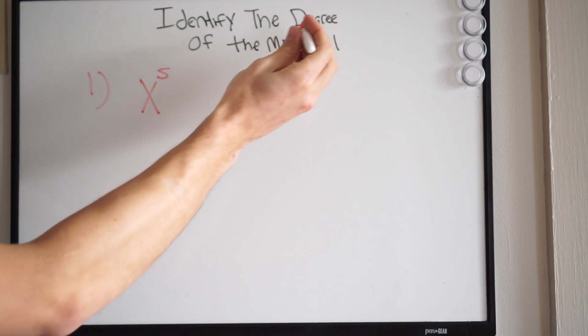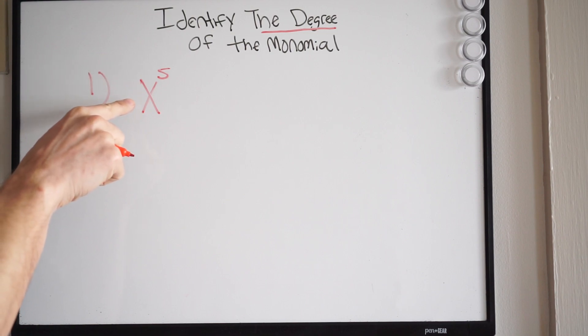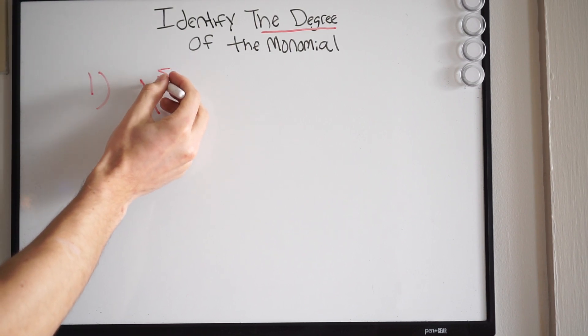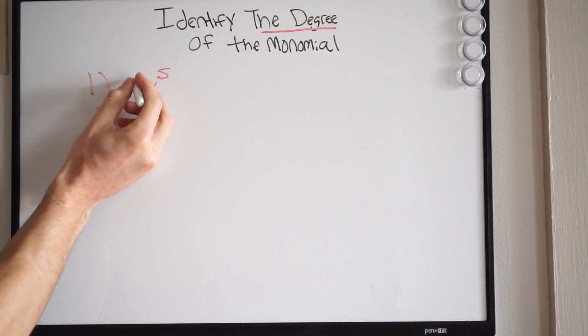Now, we're trying to find the degree. So what that's telling us is to look at the variable. Okay, the variable is important. And what is the exponent? So here my variable is x, right. I really have a 1 here.